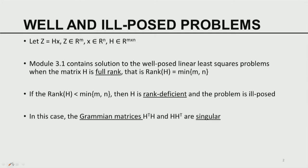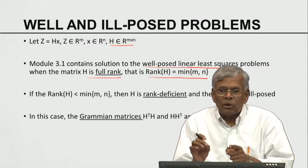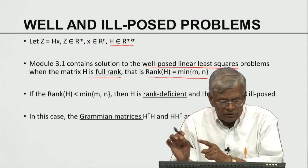Z equals H of X is the linear least square problem, where H is an M by N matrix. The well-posed problem, as discussed in module 3.1, banks on the assumption that H is full rank — meaning rank of H equals the minimum of M and N. In the over-determined case the rank is N; in the under-determined case it is M. We have considered both cases under the single rule of H being full rank.